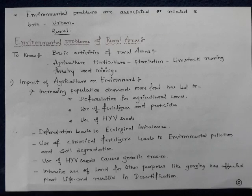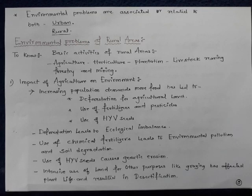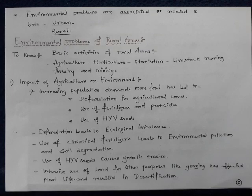Use of fertilizers and pesticides has resulted in the contamination of soil. Use of high yielding varieties of seeds has put more pressure on the land for consistent food production. Due to the growing demand for food, as more and more land has been brought under agriculture, deforestation has occurred, causing ecological imbalance. Use of chemical fertilizers leads to environmental pollution and soil degradation, while use of high yielding varieties of seeds has caused genetic erosion.